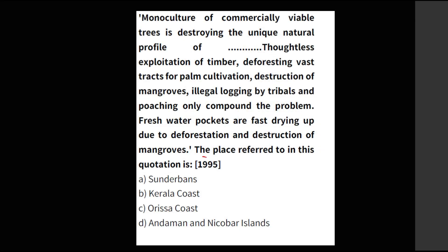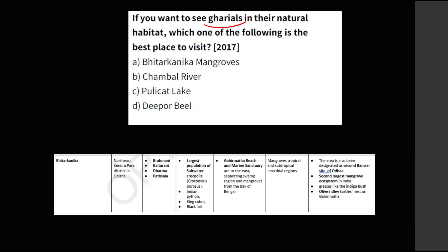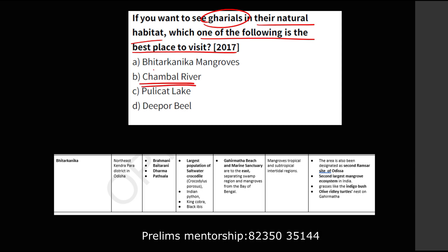A 1995 question asks: 'Monoculture of commercially viable trees is destroying the unique natural profile of...' — referring to thoughtless exploitation of timber, deforestation, vast tracts of palm cultivation, and destruction of mangroves. The answer is Sundarbans — the largest mangroves in India. Another question asks: 'If you want to see gharials in their natural habitat, which is the best place?' The answer is the Chambal river, but notably Bhitarkanika mangroves is also given as an option and is a very famous option frequently used in UPSC prelims.